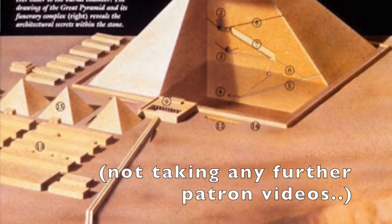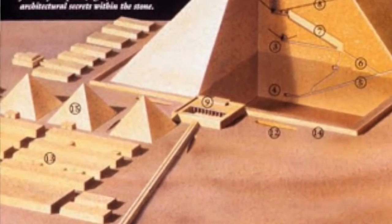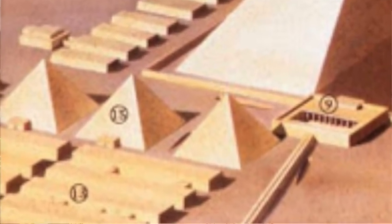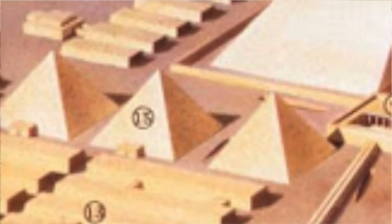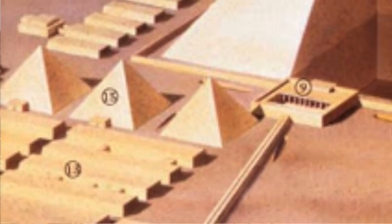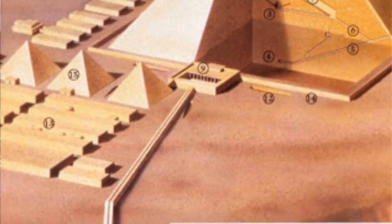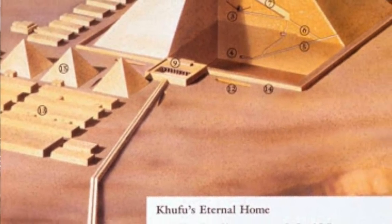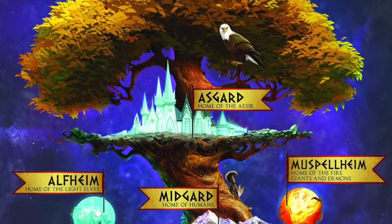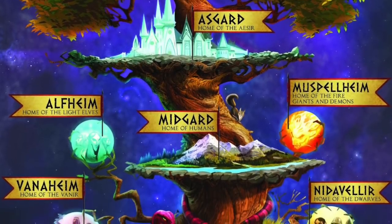This is a Patreon sponsored video. I want to basically present the information on the little pyramids. Someone asked me about the little pyramids at Giza, but after that I'm going to present why there are nine pyramids at Giza. I think I've found the reason — it's to do with the nine worlds of Norse mythology, pyramids, and world mountains. So there are nine of them and you'll see all the different worlds. It's exciting to say the least.